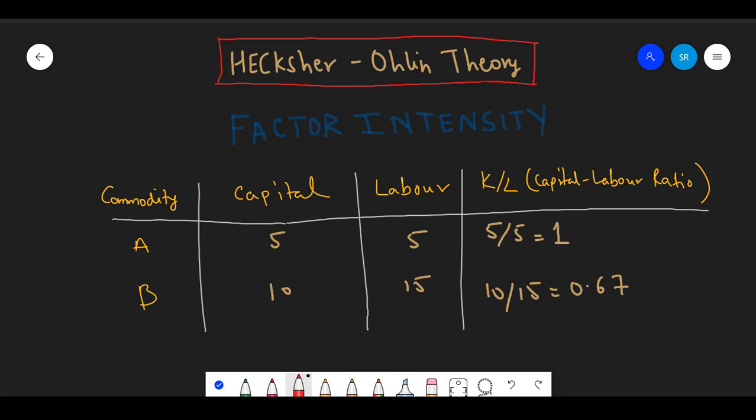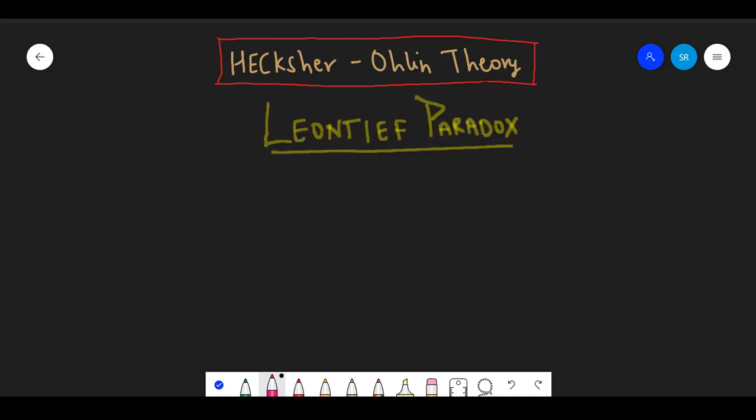As we can see that the ratio for commodity A is greater than that of commodity B, and hence we can say that commodity A is capital intensive and commodity B is labor intensive. Here we need to understand that the absolute quantities are not to be considered. Capital is abundant in commodity B, i.e. 10, but the ratio is lesser than that of A. Thus we consider commodity B to be labor intensive.